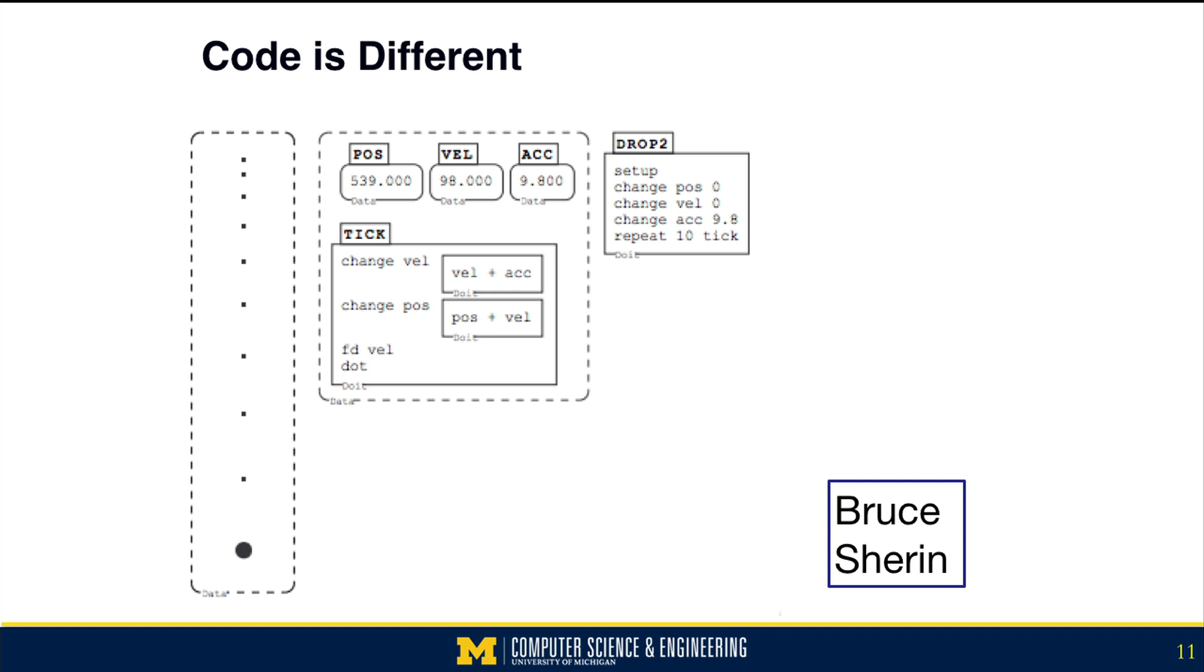The box in the middle is what happens at every tick of the clock. We're going to change the velocity into the velocity plus the acceleration. We're going to change the position to be the position plus the velocity. We're going to make the little dot on the left-hand side drop according to the velocity, and then create a dot on the screen, and that creates the falling object representation.